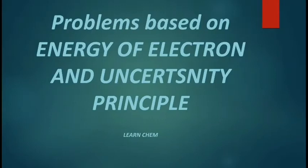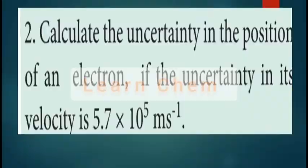Students, this session we are going to discuss problems based on the energy of an electron and the uncertainty principle. The first problem is: calculate the uncertainty in the position of an electron if the uncertainty in its velocity is 5.7×10⁵ m/s. They have given the uncertainty in velocity and asked to find the uncertainty in position.